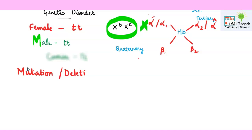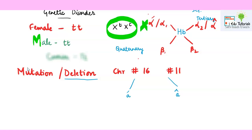We will be talking about chromosome number 16 and chromosome number 11. As there are two chromosomes mentioned, thalassemia is of two types: it could be alpha-dash thalassemia or alpha-cap thalassemia.